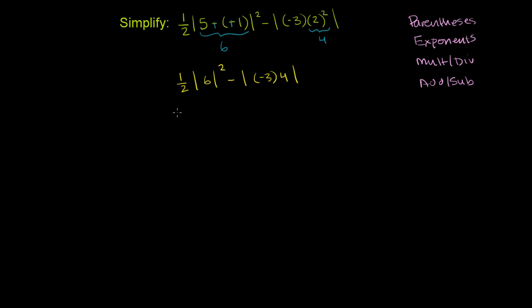So this part right here will become 1 half times 36. And then over here, we have minus, we have in the absolute value sign, negative 3 times 4 is negative 12.